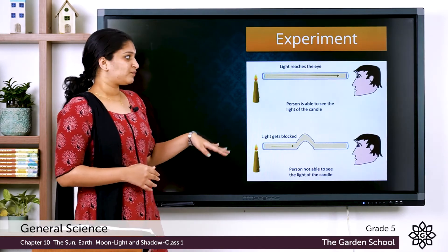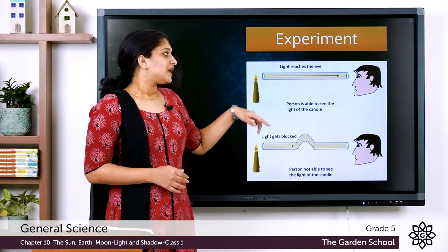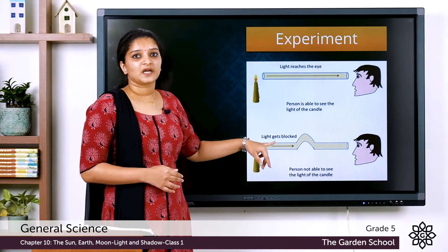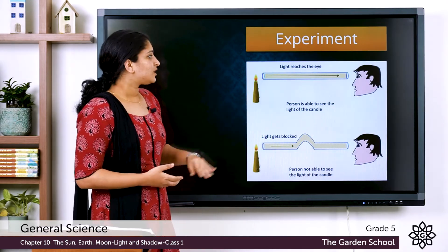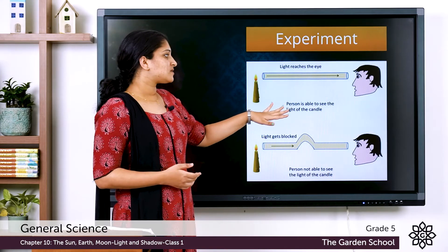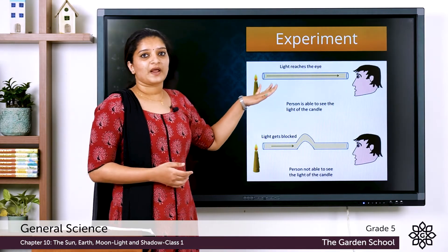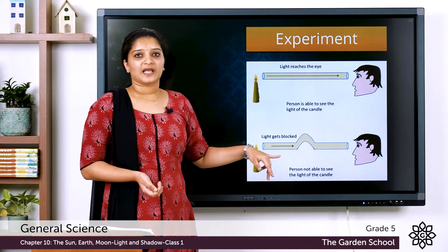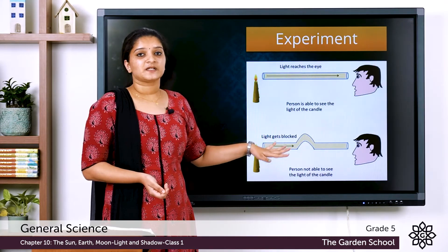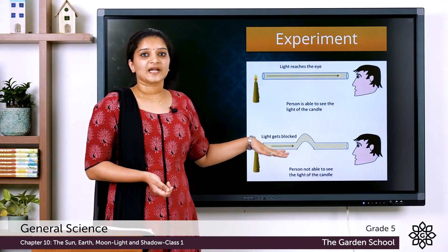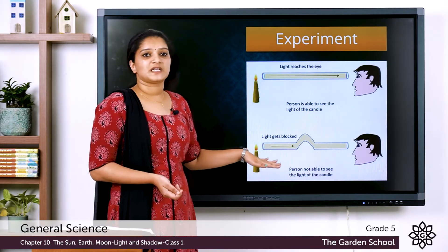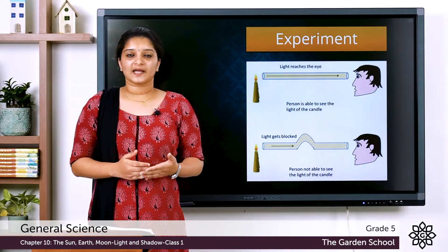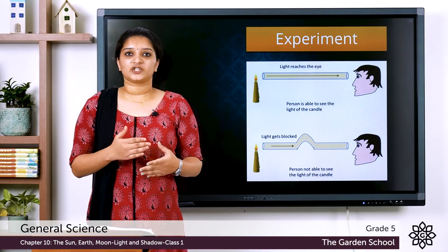Let me prove this with the help of an experiment. In this experiment two cases are given. In the first case the individual uses a straight pipe, while in the second case the individual uses a bent pipe to see the candle light. In the first case the light reaches the eye and the person is able to see the candle through the straight pipe. In the second case the light gets blocked because the pipe is bent, so the person is not able to see the candle. This proves that light always travels in a straight line, justifying the principle of rectilinear propagation of light.